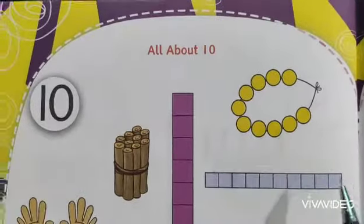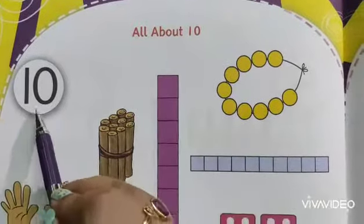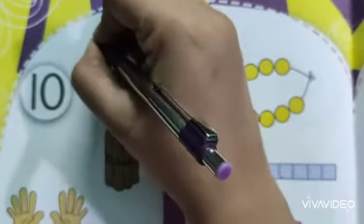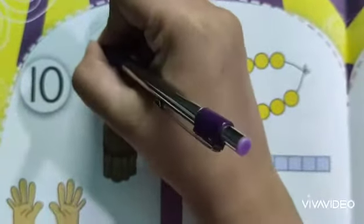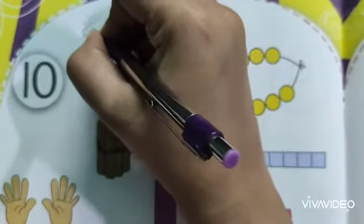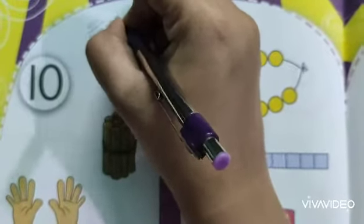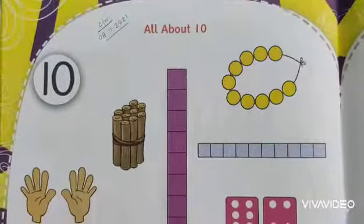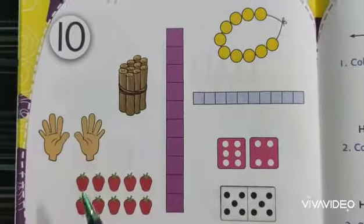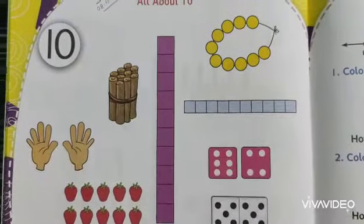So as you know the number 10, 10. So here you just mark like CW and today's date 08-11-2021. So you can see the pictures and it's all about number 10.